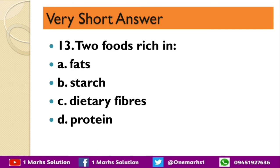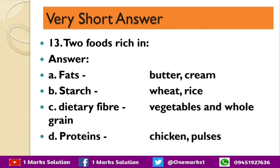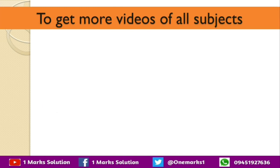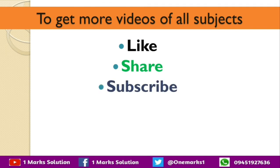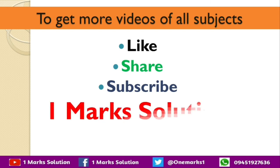Name two foods rich in fats, starch, dietary fibers, and protein. Fat is found in butter and cream. Starch is in wheat and rice. Dietary fiber is in vegetables and whole grains. And proteins are in chicken and pulses. Hope you like this video. Share this video with your friends and subscribe the channel for more videos from each chapter of your class. Thank you so much.